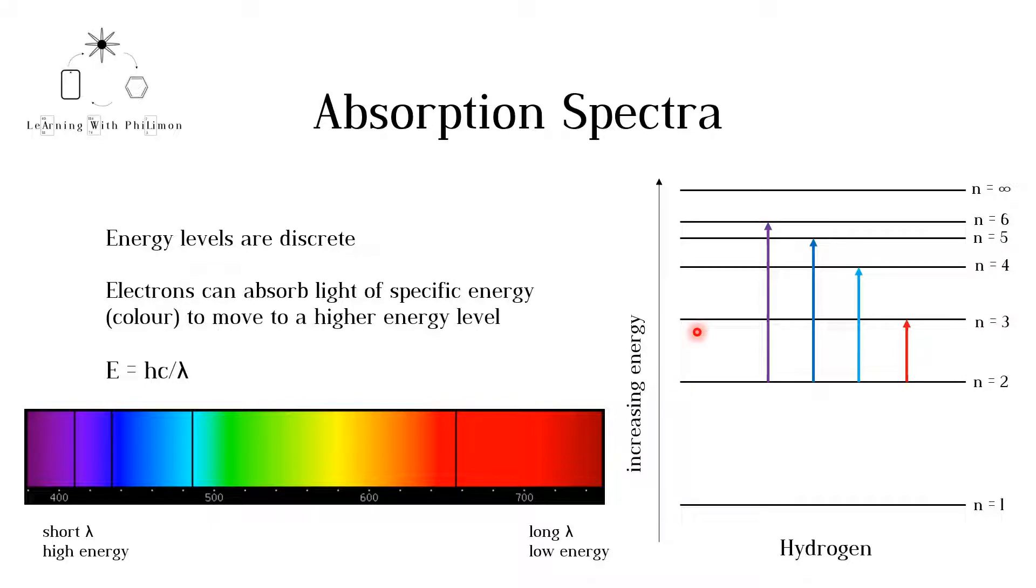For electrons to move to a higher energy level, they need to absorb light with an energy equal to the energy difference between the two energy levels. If they absorb any less energy, they cannot make it to the next energy level.